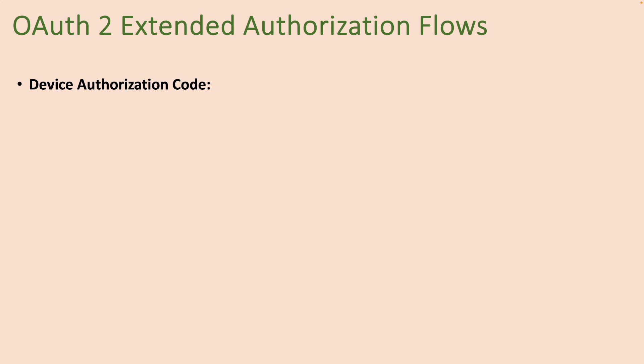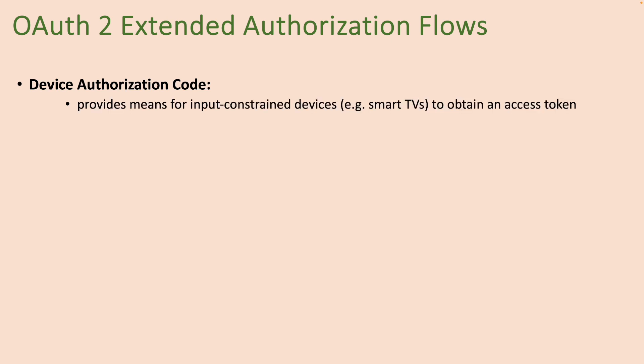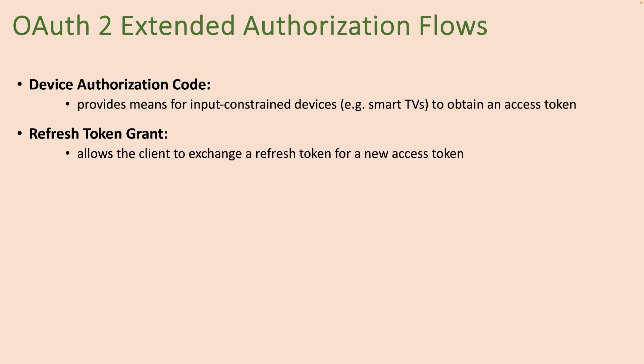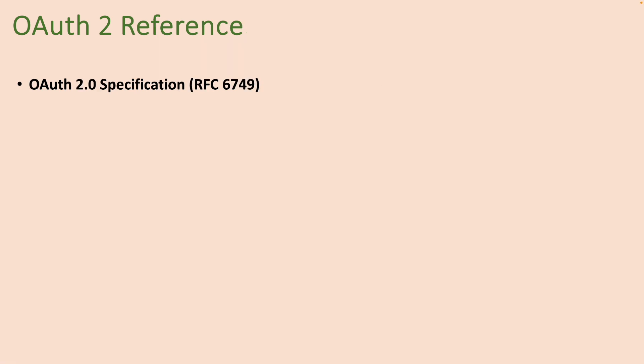The OAuth 2.0 specification also defines some extended authorization flows, such as the device authorization code flow that provides a means for input-constrained devices such as smart TVs to obtain an access token, and the refresh token grant flow that allows the client to exchange a refresh token for a new access token. That's enough for the basics and fundamentals of OAuth 2.0 for beginners.